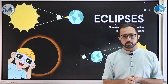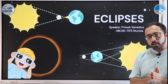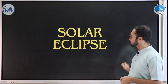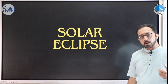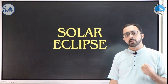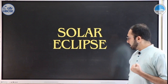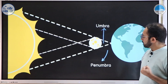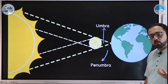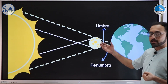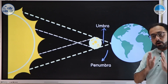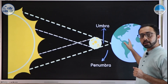Let us now start with the first type of eclipse: solar eclipses. Solar eclipses are the eclipses of the sun. In a solar eclipse, the moon comes in between the sun and the earth, and a shadow of the moon falls on the earth.